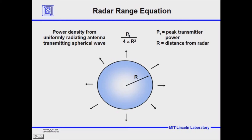At any distance R away from that transmitter, the density of power is given by that peak power divided by the area of the sphere, because that energy density diminishes as the sphere gets larger. So at a given arbitrary distance from the radar, the power density is P sub T divided by 4πR².